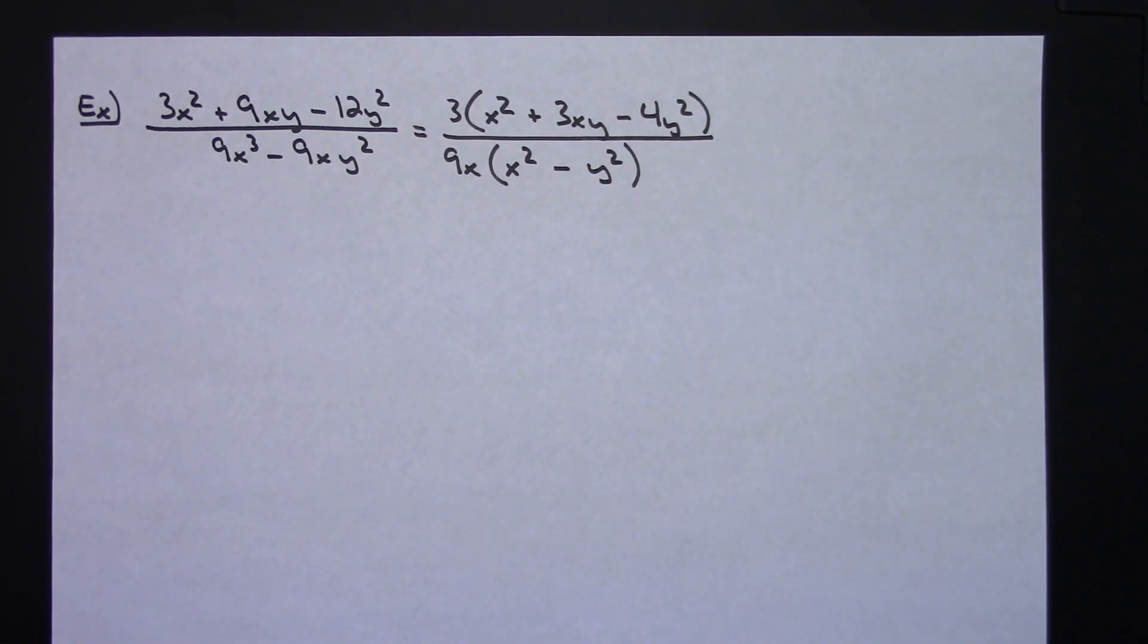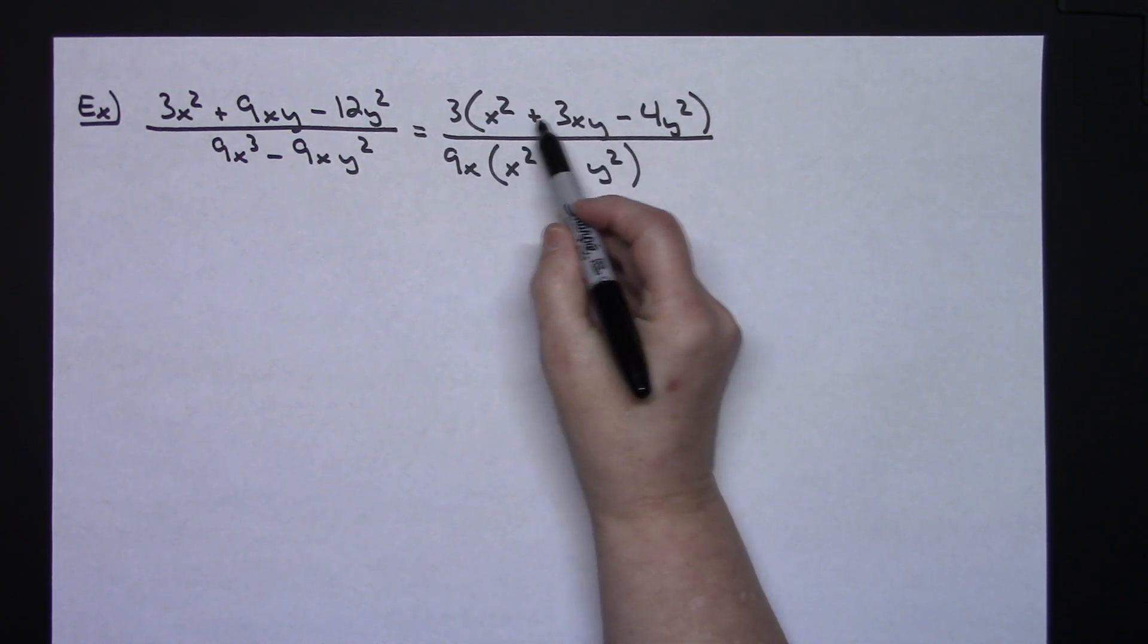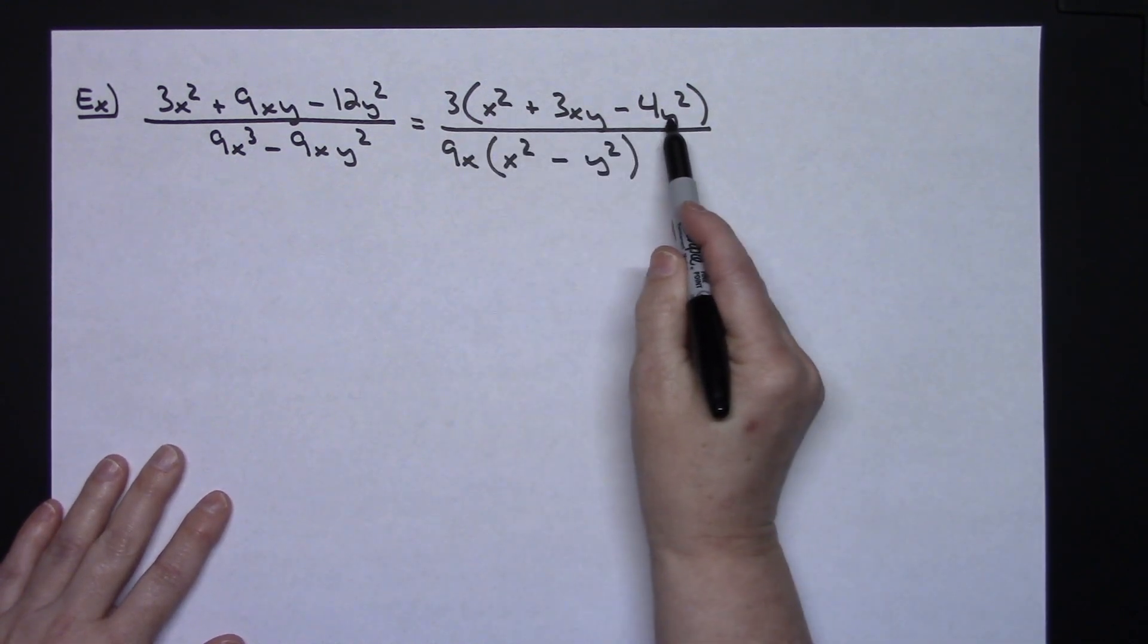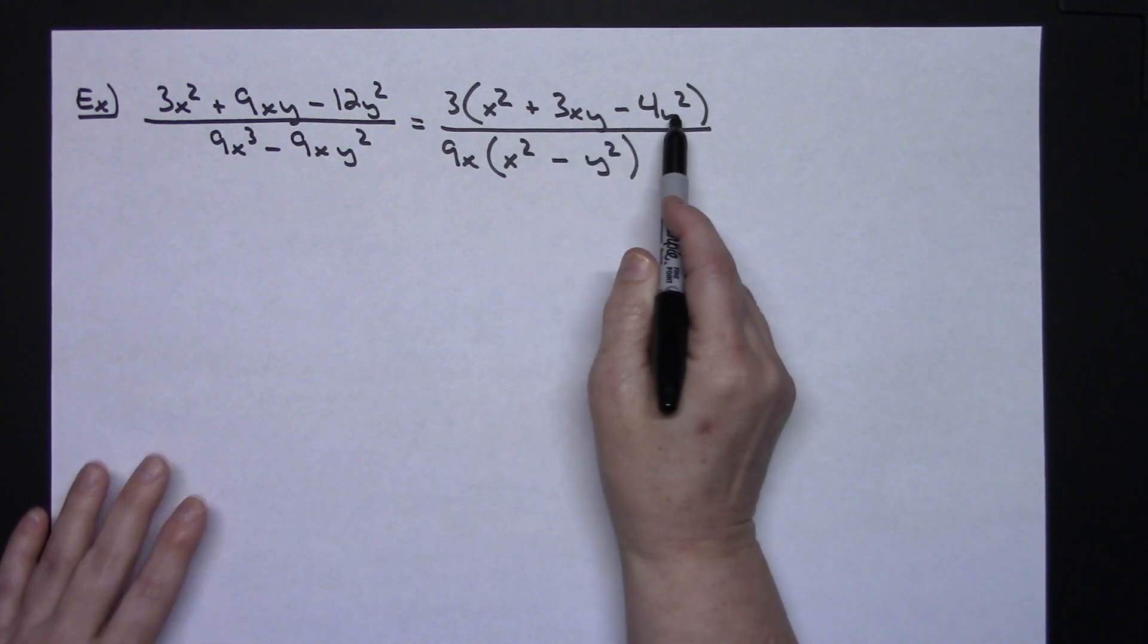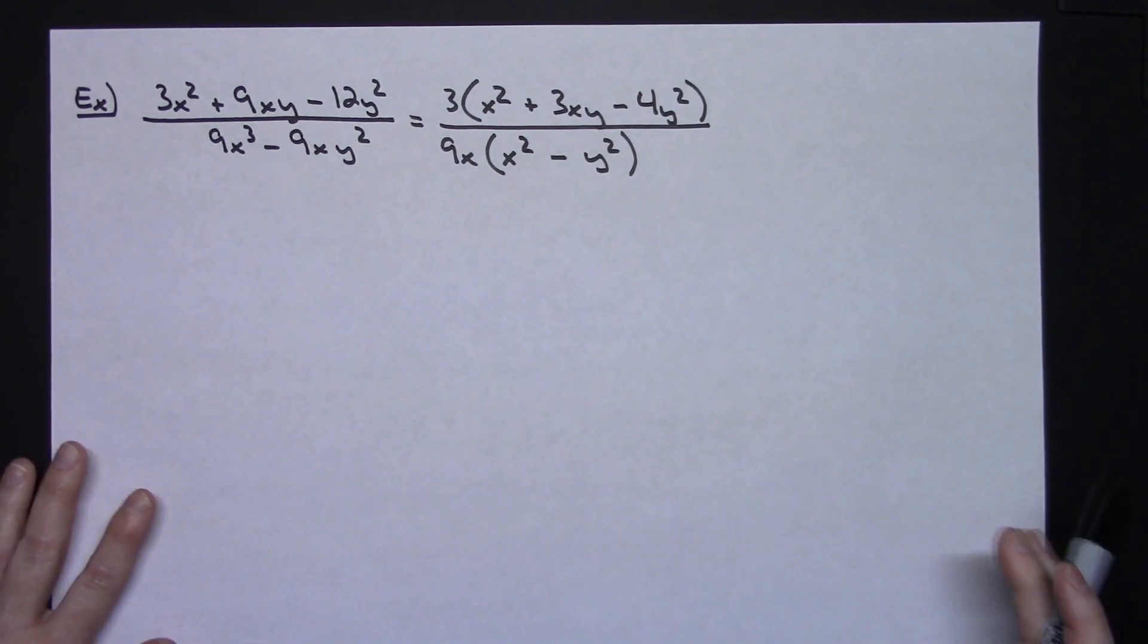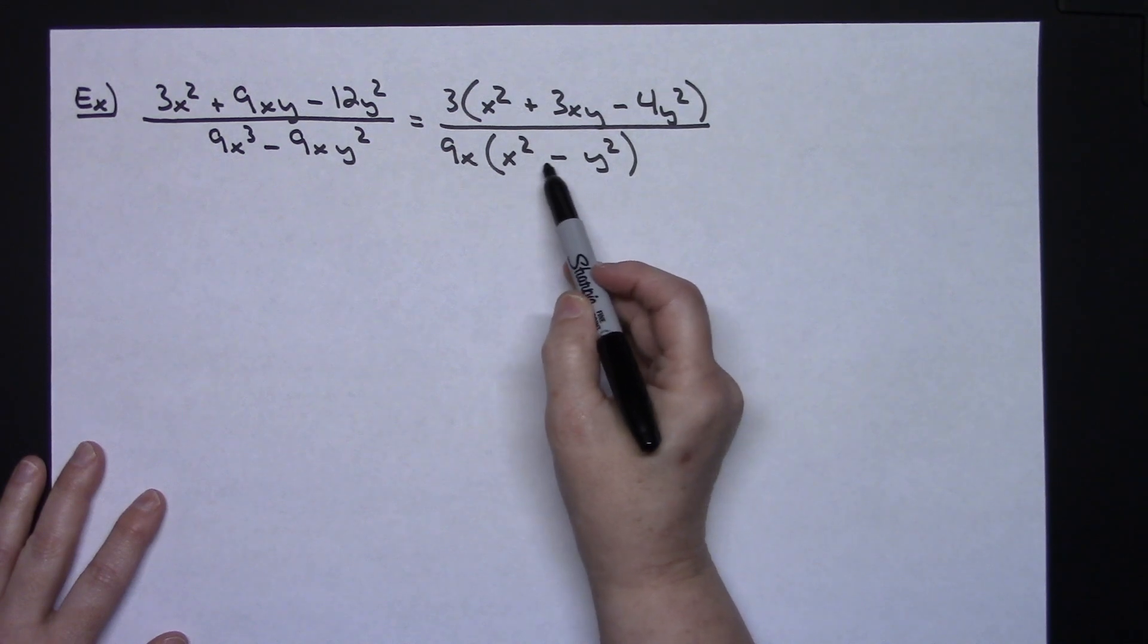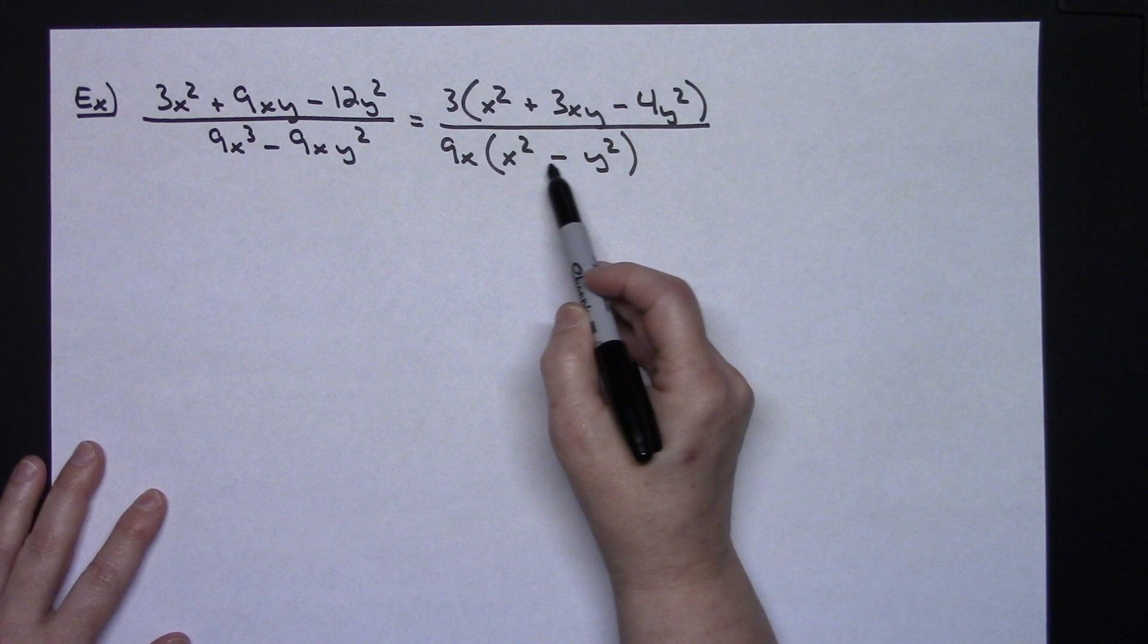Okay now the 3 and the 9x I'm just going to leave there. For a while I'm going to focus with what I have on the inside of the parentheses. I've got a trinomial here that's going to factor with a guess and check. It's got some extra variables in there but it's still going to be a trinomial that we guess and check and on the bottom right here is going to be the difference of two squares. I've got a perfect square here, perfect square here and I am subtracting.